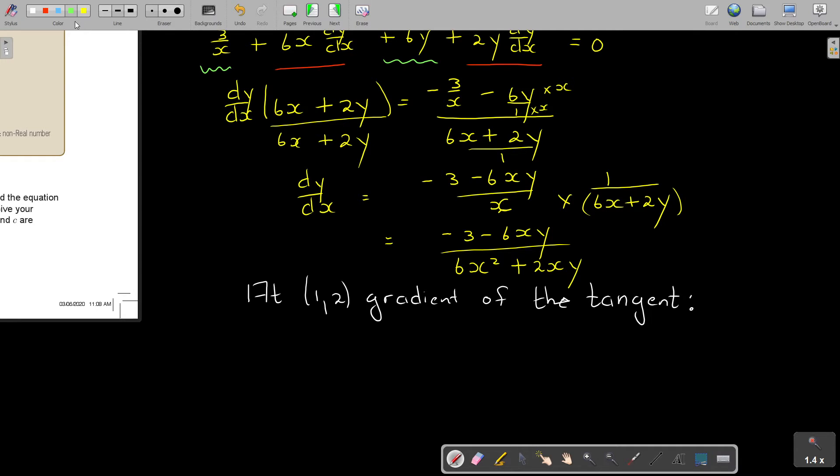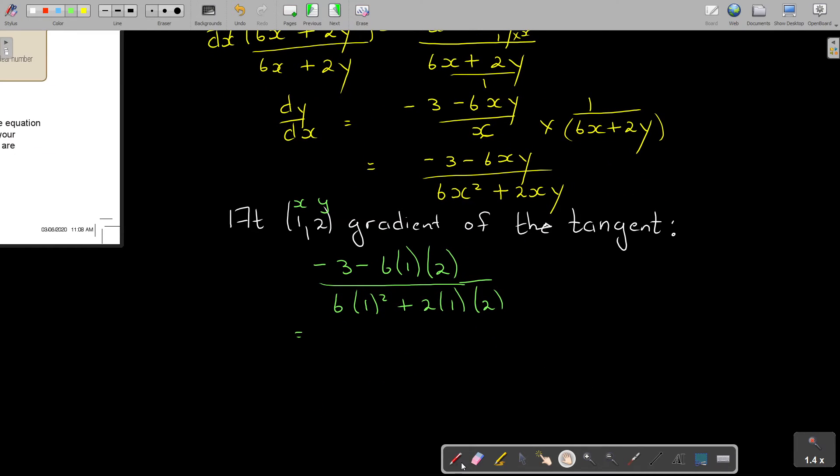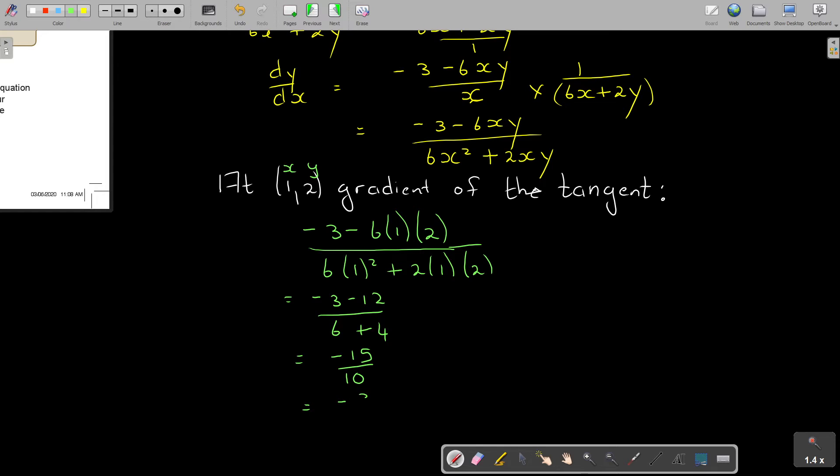I'm going to write it here. It's going to be negative 3, and in the place of x, I put 1. In the place of y, I put 2. This is negative 3 minus 12, and this is 6 plus 4. That's negative 15 over 10. If I simplify that, it's negative 3 over 2. But remember, that's the tangent.